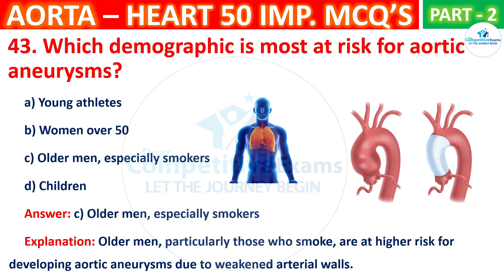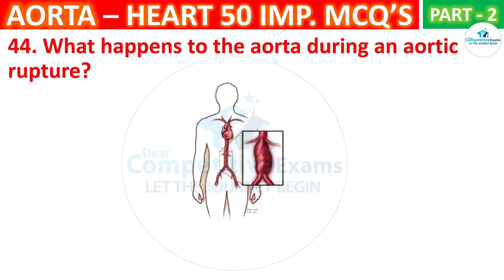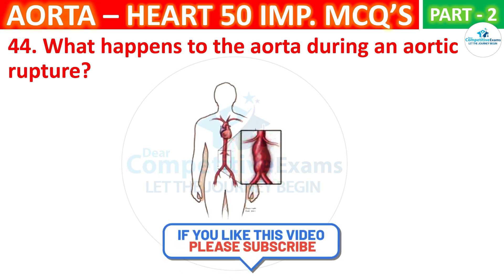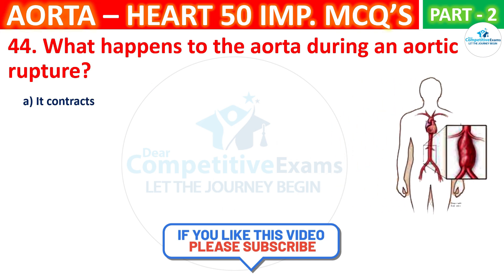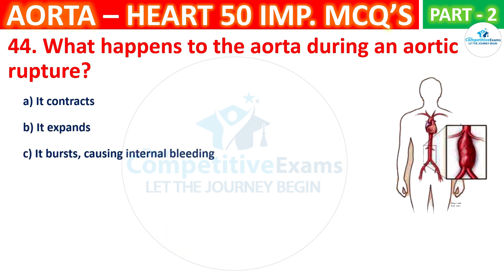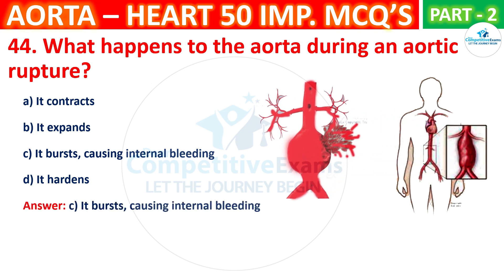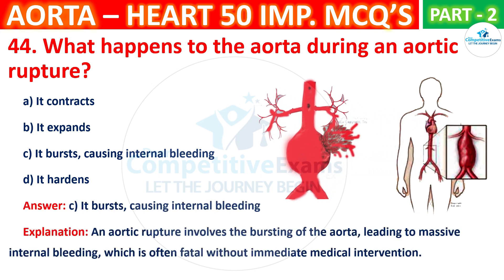Question No. 44. What happens to the aorta during an aortic rupture? The options are: It contracts, It expands, It bursts causing internal bleeding, or It hardens. The correct answer is C, that is it bursts causing internal bleeding. An aortic rupture involves the bursting of the aorta, leading to massive internal bleeding, which is often fatal without immediate medical intervention.